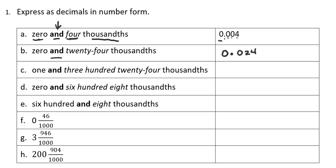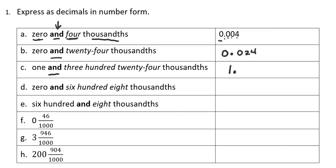In question C, I have one and three hundred twenty-four thousandths. So I have a one in the ones place and my decimal point where the 'and' is. Now I have three hundred twenty-four that needs to land in the thousandths place. Since my thousandths place is the third place over, I can just write those three digits — three hundred twenty-four — and the four is in the thousandths place. So this number is read as one and three hundred twenty-four thousandths.